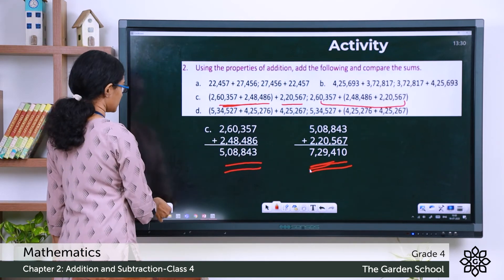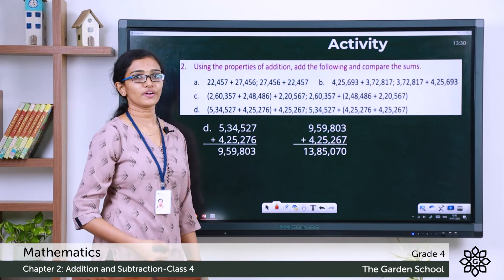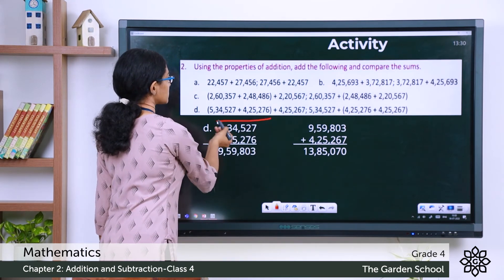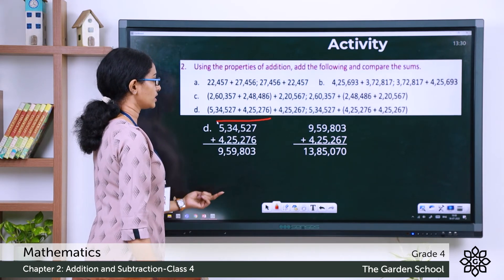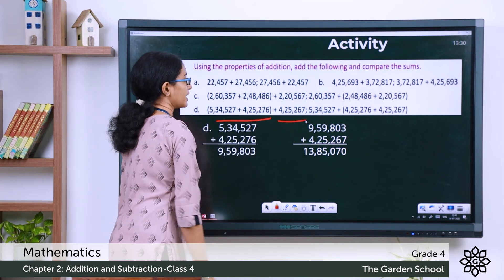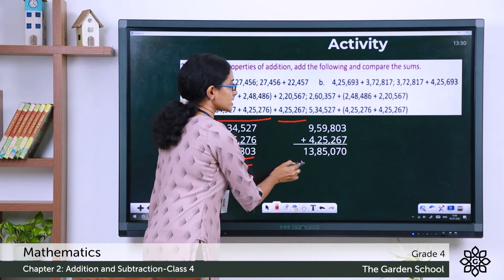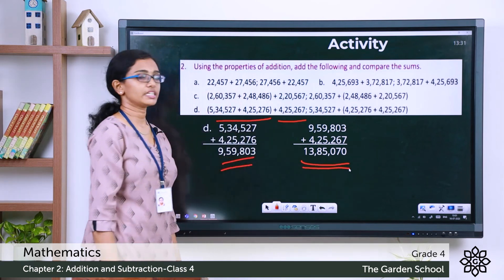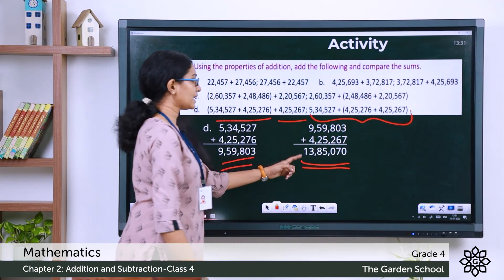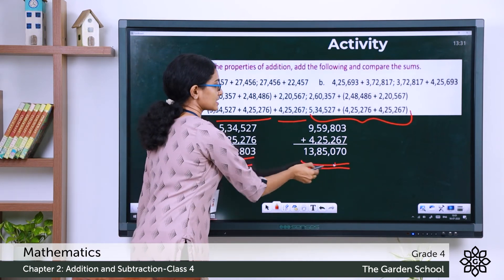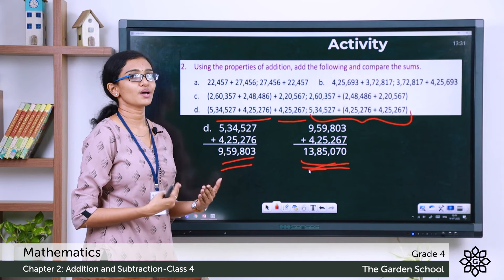For question D, it's also about grouping of add-ins. The sum of the first grouped part is 9,59,803. Adding the remaining number gives the total sum 13,85,070. You should do this part in your notebook and check if the sum is the same with the other grouping. If the sums match, the property of grouping of add-ins is verified.